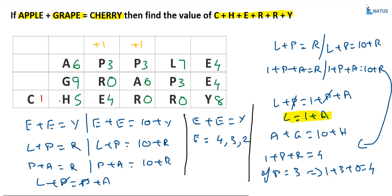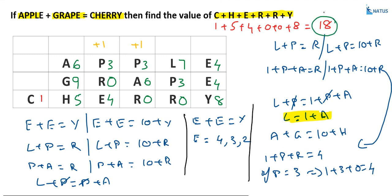Now we know all the letter values. We will substitute the values of each letter. C equals 1, H equals 5, E equals 4, R equals 0, and Y equals 8. The sum of the digits of CHERRY is: 1 plus 5 equals 6; 6 plus 4 equals 10; 10 plus 0 equals 10; 10 plus 8 equals 18. So the total digit sum of CHERRY equals 18.